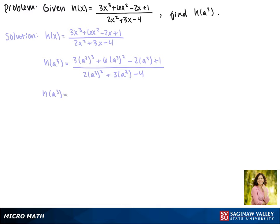So this gives us 3 times a to the 9th plus 6 times a to the 6th minus 2a cubed plus 1, all over 2a to the 6th plus 3a cubed minus 4.